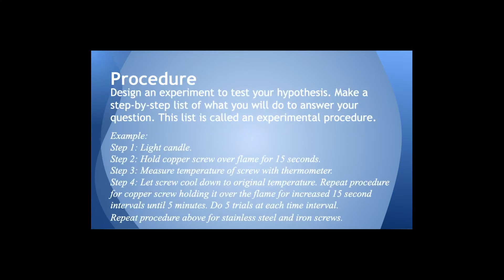Procedure. This is how we went about doing the experiment. First, we had to light the candle. Then we took one of the screws and held it over the flame for 15 seconds. We measured the temperature of the screw with the thermometer. Then we let the screw cool down to its original temperature and we repeated that for 15 second intervals all the way up to five minutes. We had to do this five different times for each screw. Then we repeated this for the stainless steel screw and the iron screw.